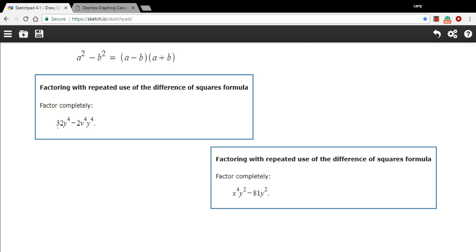So let's see how this works. In this problem, we have 32y to the fourth minus 2v to the fourth y to the fourth. And really, the first thing we need to do here is, these don't look like perfect squares on either side, is to see what we can factor out.